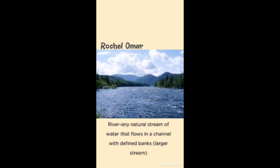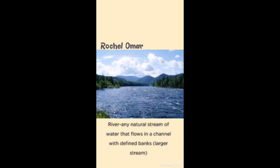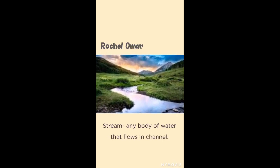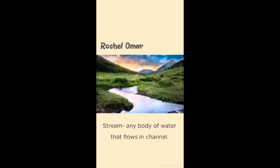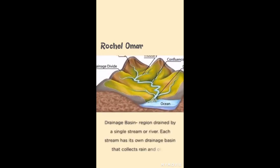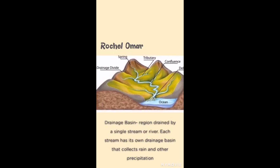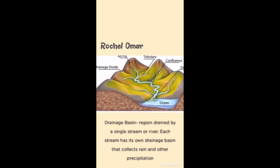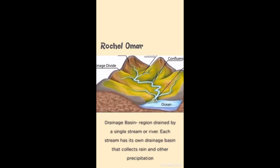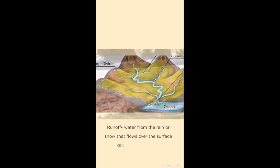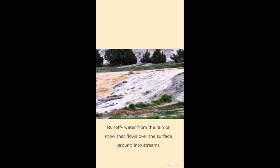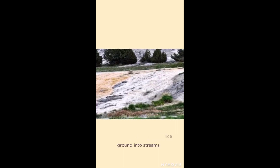A river is any natural stream of water that flows in a channel with defined banks — larger streams. A stream is any body of water that flows in a channel. A drainage basin is a region drained by a single stream or river; each stream has its own drainage basin that collects rain and other precipitation. Runoff is water from rain or snow that flows over the surface of the ground into streams.